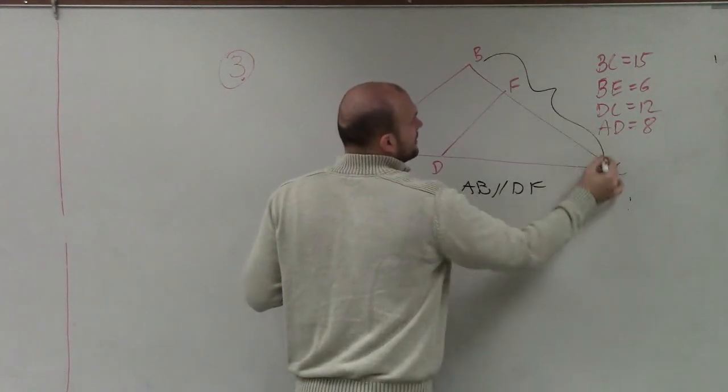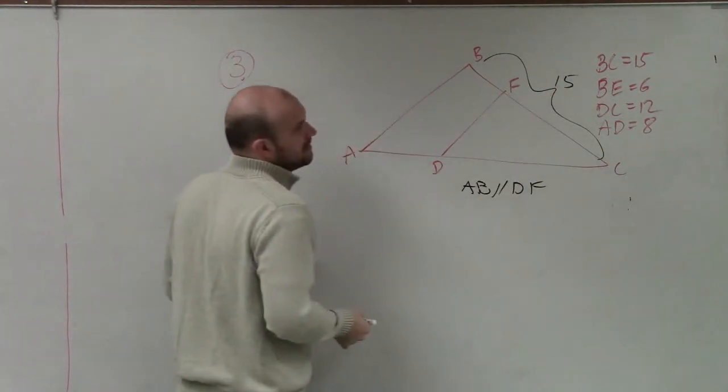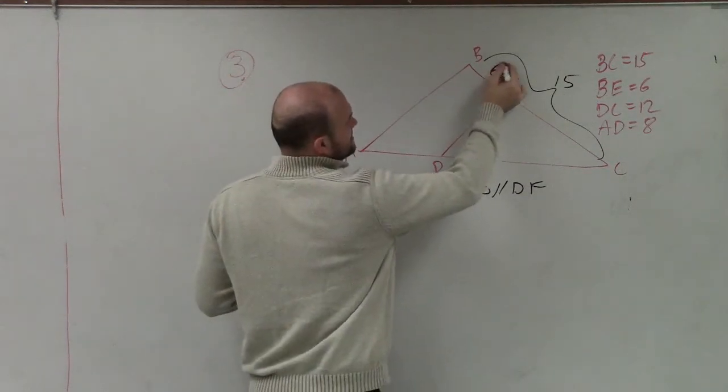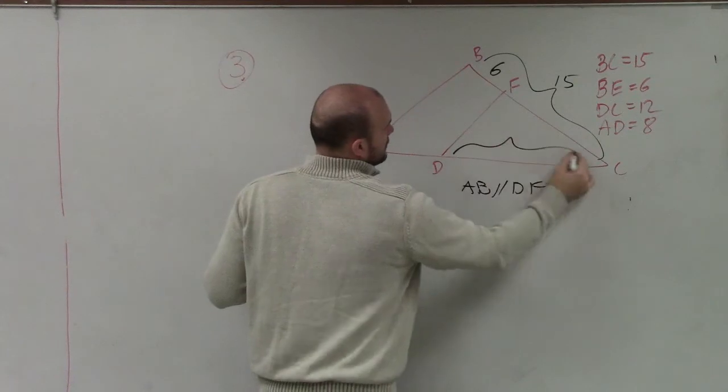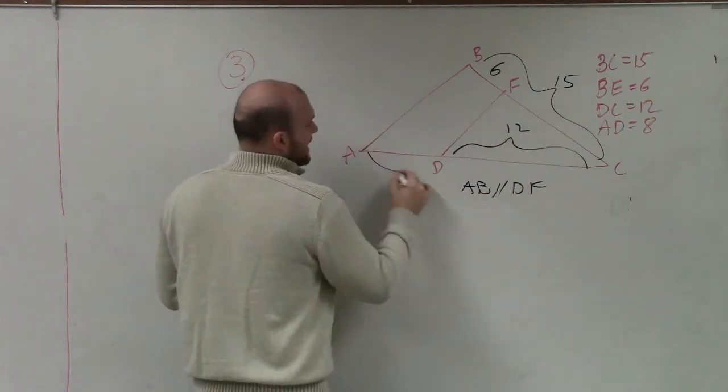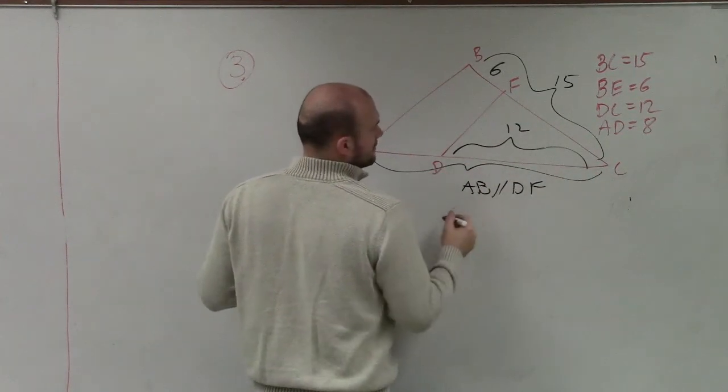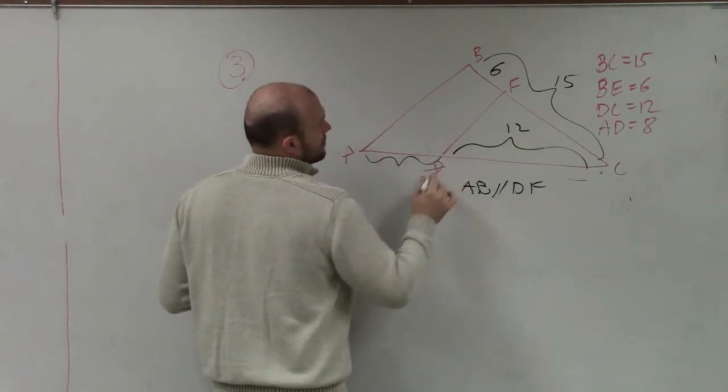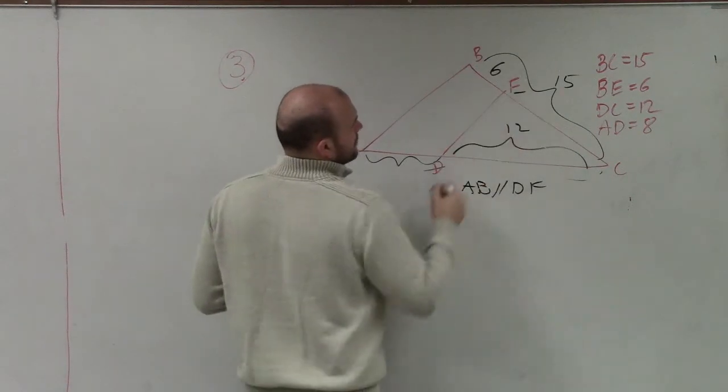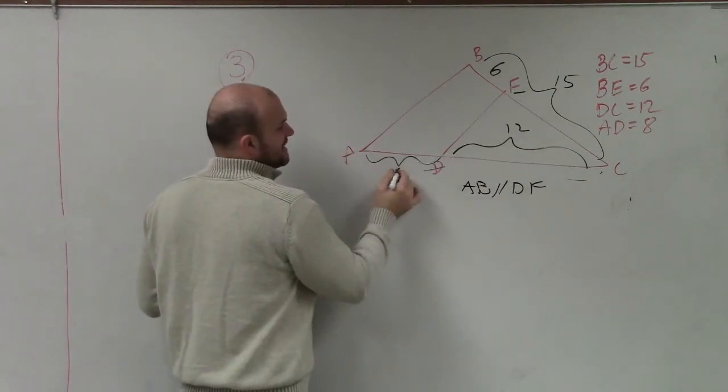We have BC is 15, BE is 6, DC is 12, and AD, that's right there, AD is 8.